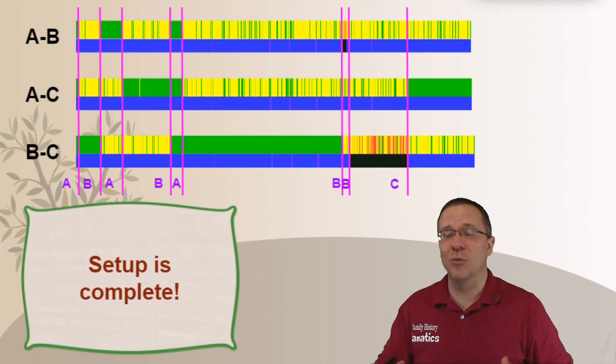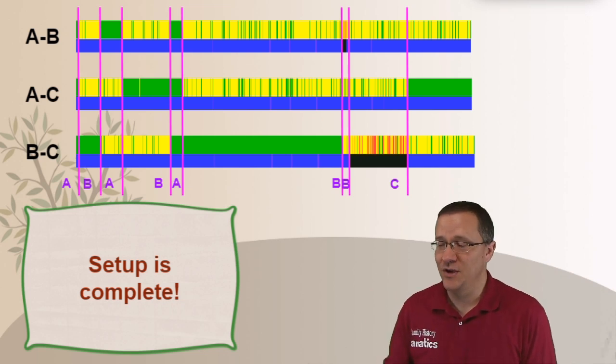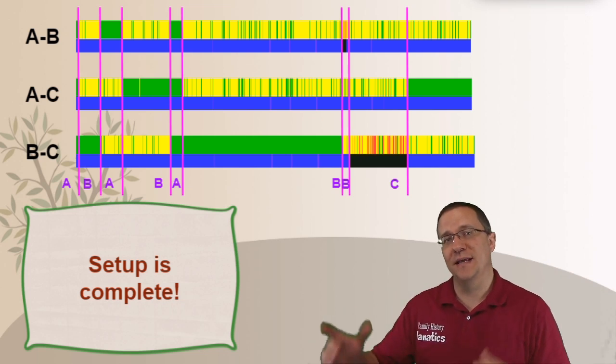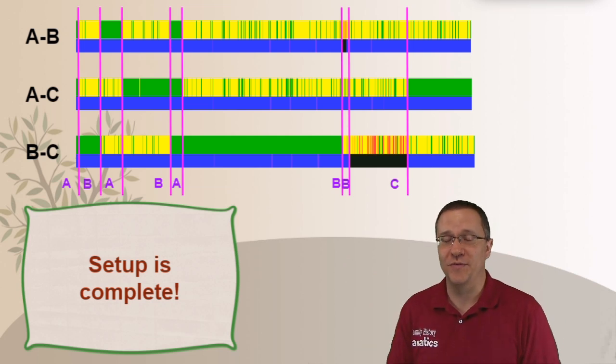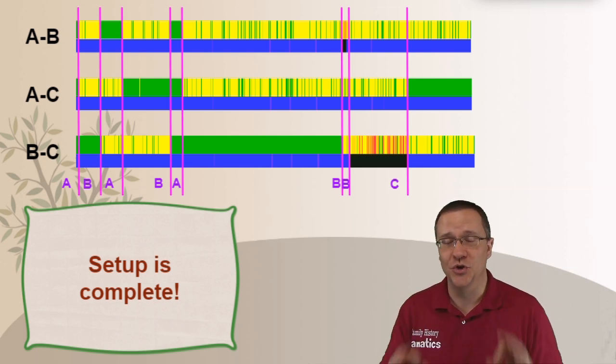And with this our setup is complete. We have gathered the data that we need in order to get started with visual phasing. We've identified our recombination points and we've assigned those recombination points. So if you've been able to get this far on just one chromosome then congratulations. You are ready to go on to the next step.